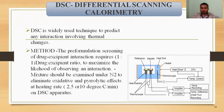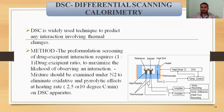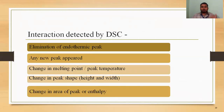The DSC apparatus has two holders: one sample holder and one reference holder. Inside, a heater is fitted along with a heat sink. A CPU is connected with the DSC apparatus; two amplifiers are also required along with heat registers and thermocouples. One software and a computer are required for calculating and storing the data. The main factor recorded is temperature.